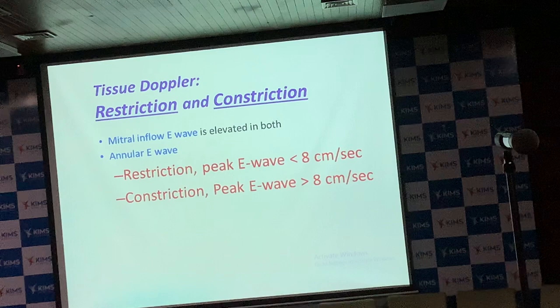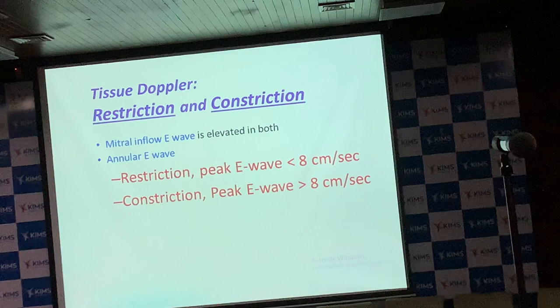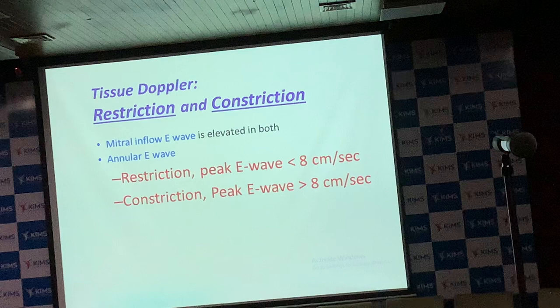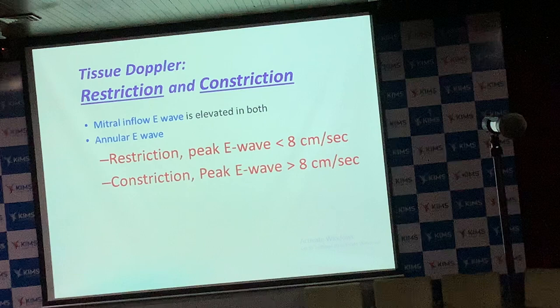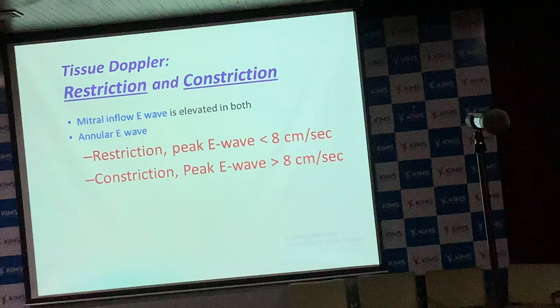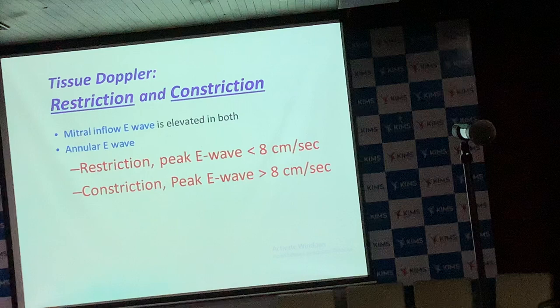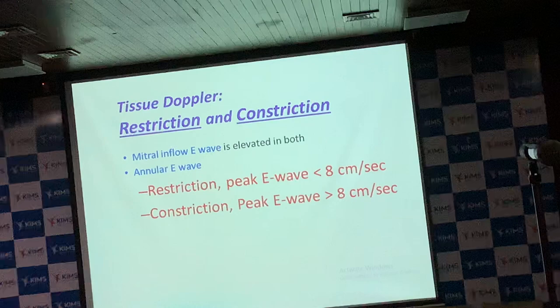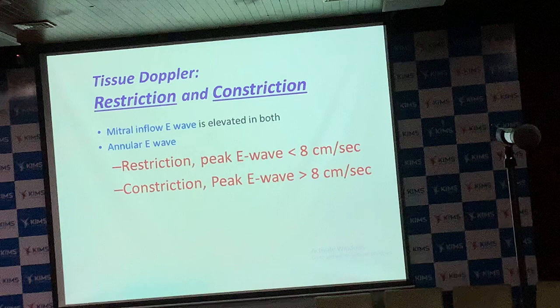Another important finding: in restrictive myocardial disease, mitral valve peak E-prime velocity (tissue Doppler annular velocity) is less than 8 cm/s as a general rule. Whereas in constriction, it is almost always more than 8 cm/s — unless there is myocardial involvement. This is a very easy and reliable parameter. The cut-off is 8 cm/s.